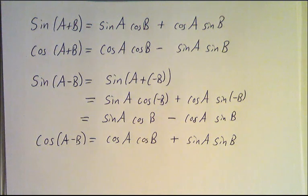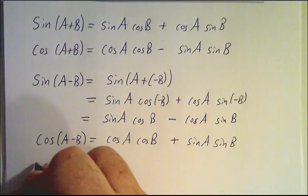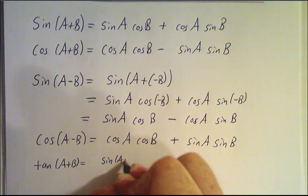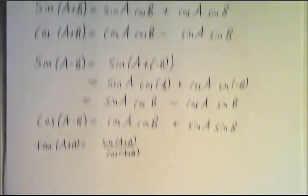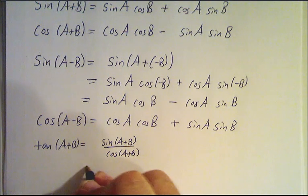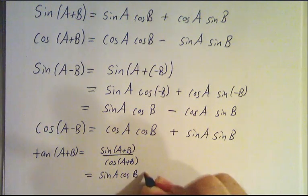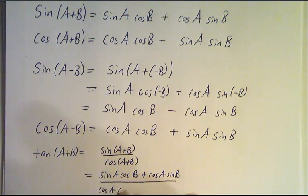You might be wondering about tangent, cotangent, secant, and cosecant. If you know what happens to sine and cosine, you automatically know what happens to tangent and secant. For example, the tangent of a plus b is just the sine of a plus b divided by the cosine of a plus b — you don't have to remember a separate formula. Writing it out: that's sin(a)cos(b) + cos(a)sin(b) divided by cos(a)cos(b) - sin(a)sin(b).